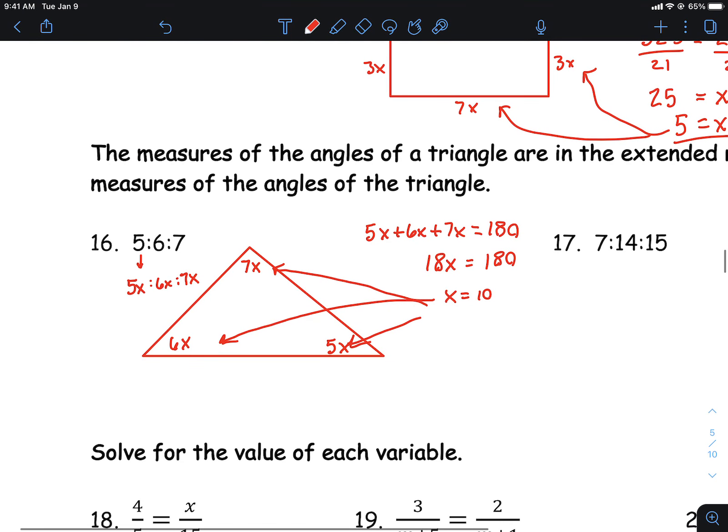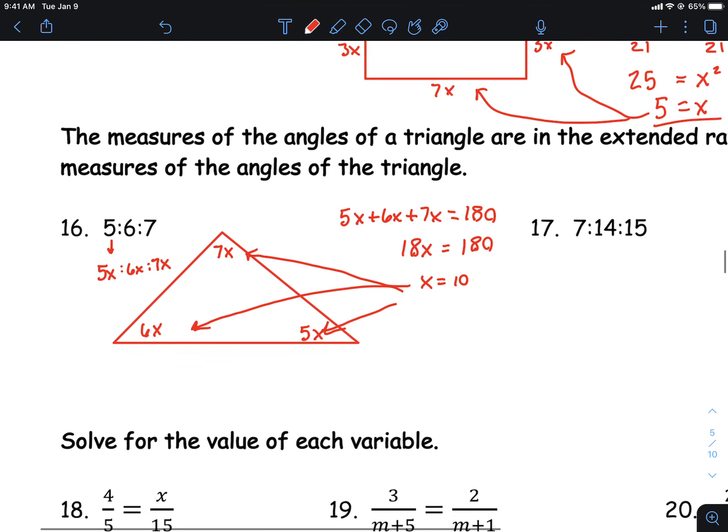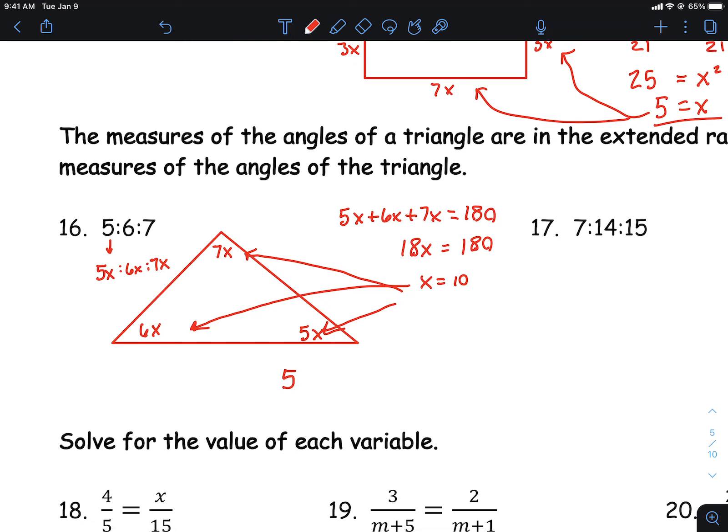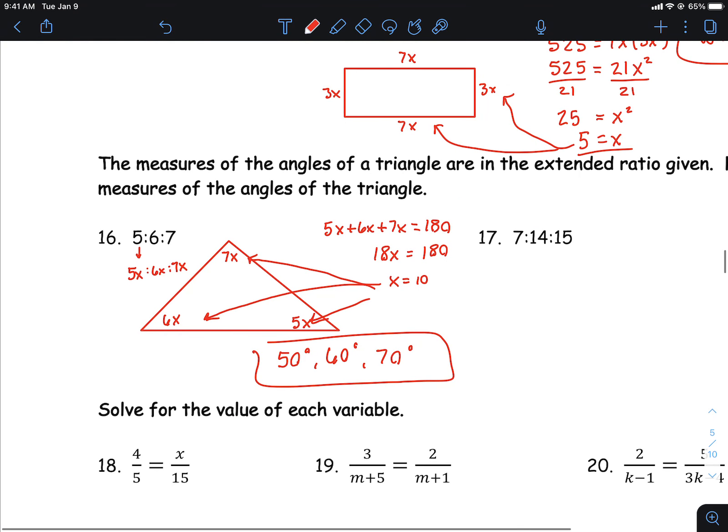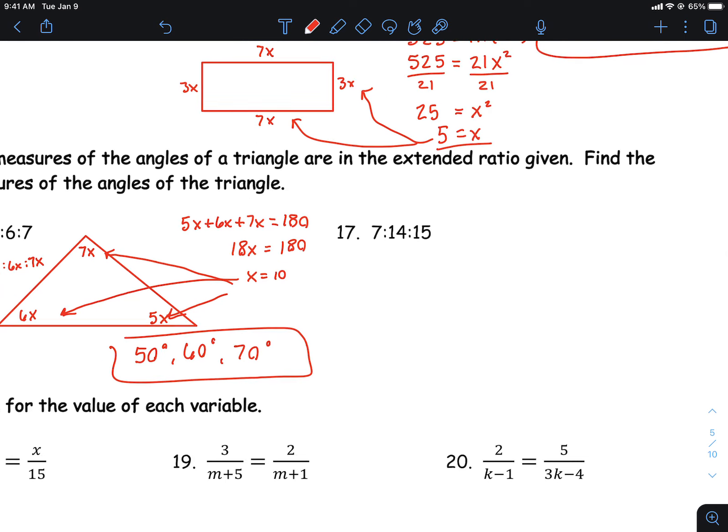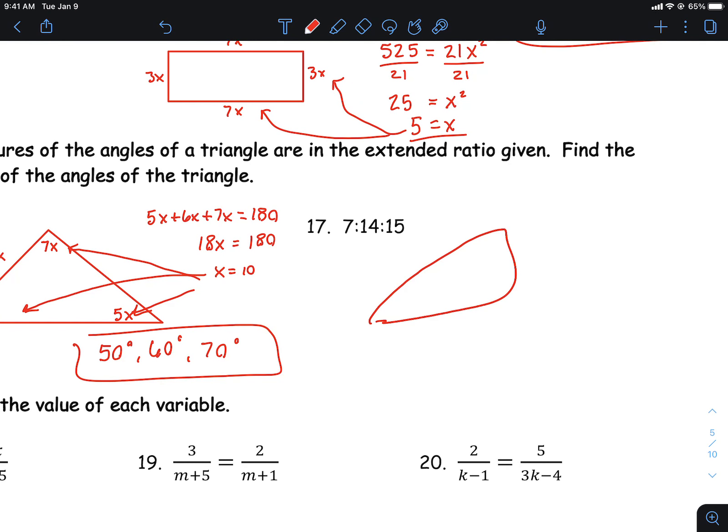So the angles, they didn't give us a specific order. So 5 times 10 is 50 degrees, 60 degrees, 70 degrees. And that's your answer there. So you might have been able to use a little bit of intuition there, but that's going to be the best way there to set those up.